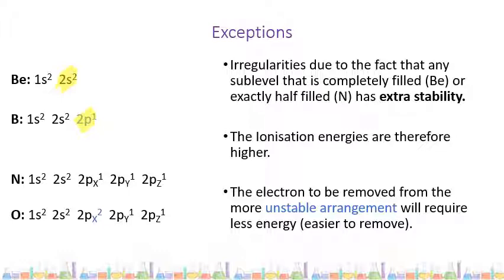If we look at nitrogen, the 2p sublevel is exactly half filled — it can hold six electrons and it has three in there. Again, that's going to have extra stability. In oxygen, however, the p sublevel has four electrons in it, and so that's a more unstable arrangement that will require less energy to remove an electron.